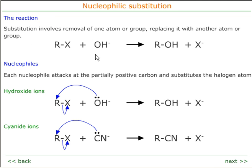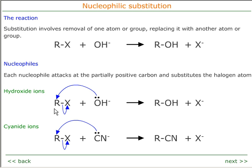A substitution reaction is just like in football — one thing substitutes another in the molecule. One thing goes in and one thing goes out. In this case, the hydroxide ion substitutes the halide ion from the molecule. When hydroxide ions attack a haloalkane, we get an alcohol and a halide ion.